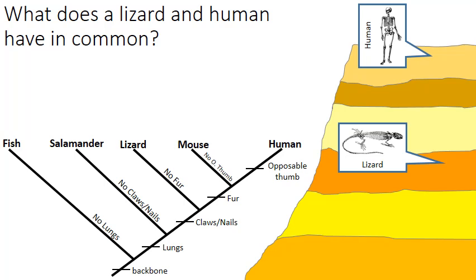If I were to ask what does a lizard and a human have in common according to this cladogram, let me highlight in red the branch leading to lizards and the branch leading to humans. Everything before they branch they have in common — that would be the backbone, lungs, and claws or nails. Notice how the lizards split to the left and the humans split to the right, but everything before the split they possess in common.